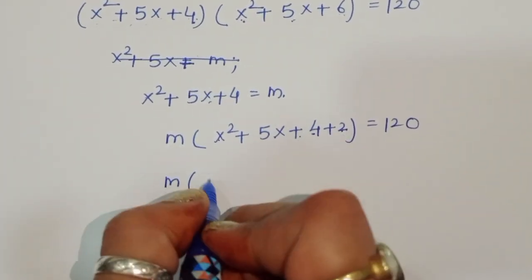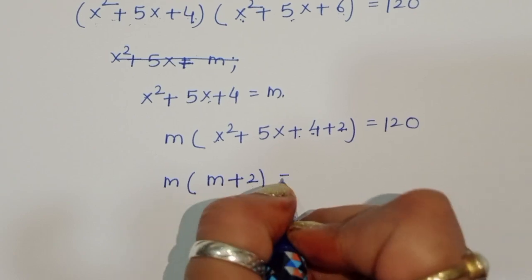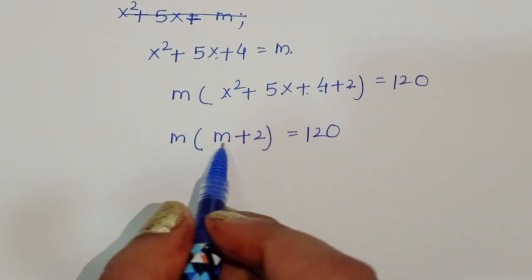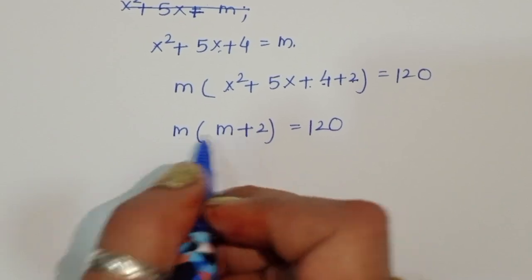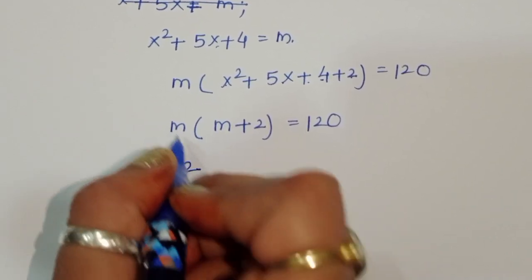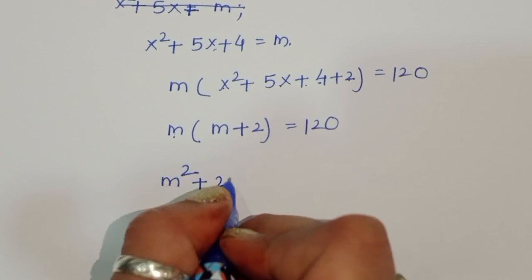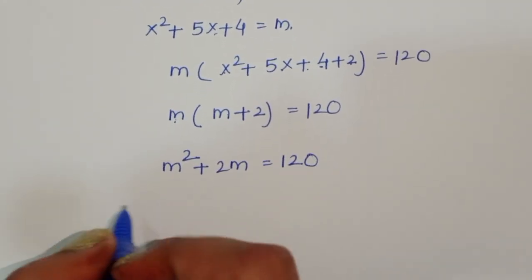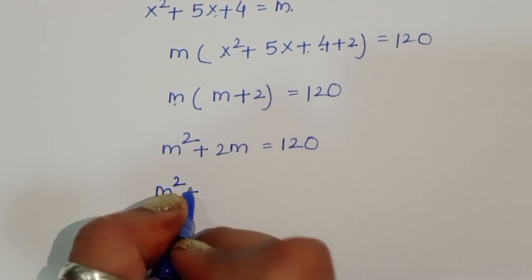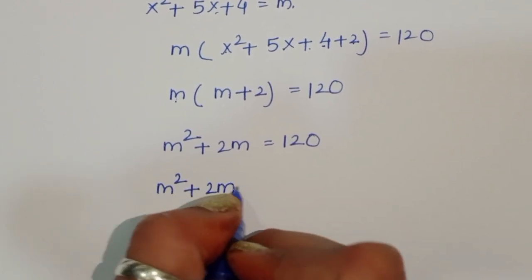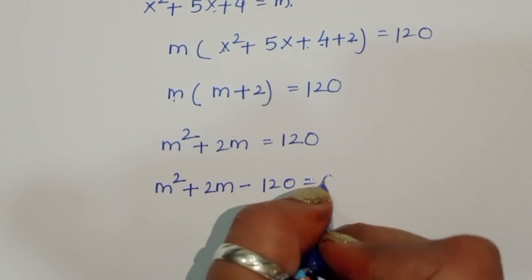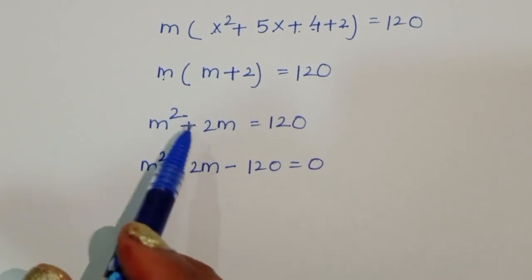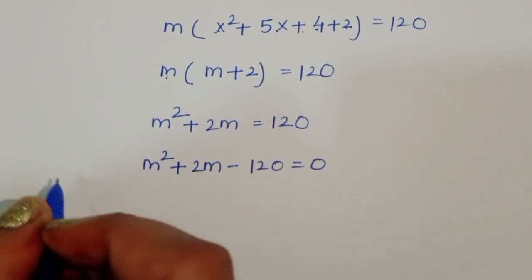Expanding: m(m + 2) = 120, so m² + 2m = 120. Rearranging gives m² + 2m - 120 = 0.